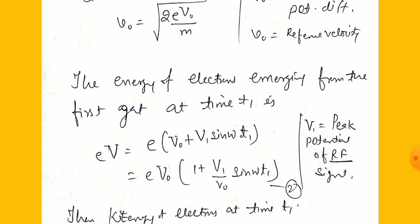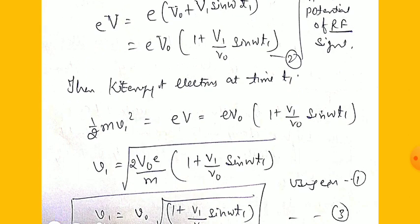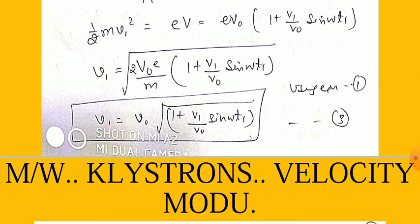Substituting, eV = eV₀(1 + V₁/V₀ · sin(ωT₁)). The kinetic energy at time T₁ is ½mv₁² = eV = eV₀(1 + V₁/V₀ · sin(ωT₁)). Therefore, the velocity at time T₁ is: v₁ = √(2eV₀/m) · √(1 + V₁/V₀ · sin(ωT₁)), which simplifies to v₁ = v₀ · √(1 + V₁/V₀ · sin(ωT₁)). Note: small v₀ and v₁ are velocities, while capital V₀ and V₁ are potentials.